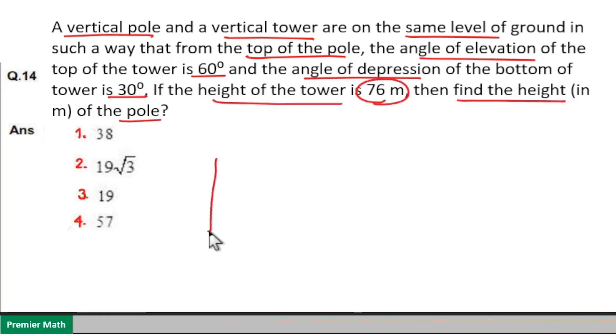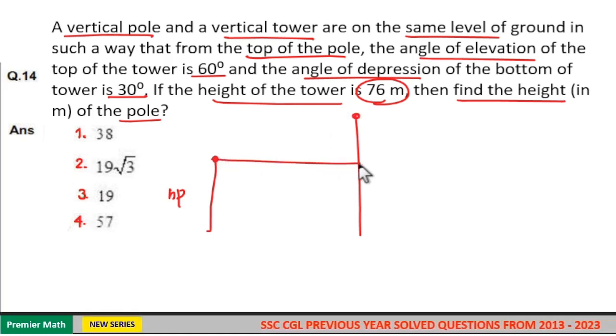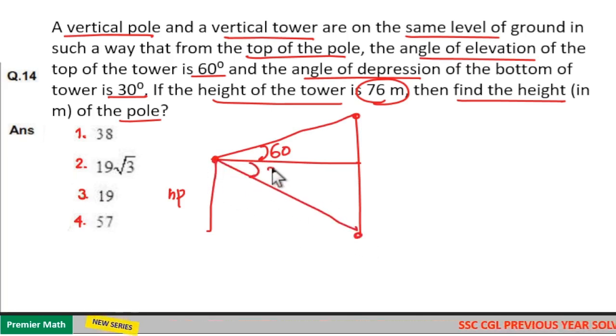Here this is the height of the pole and this is the height of the tower. Now from the top of the pole to the top of the tower, this is the horizontal length. The angle of elevation is 60 degrees, and from the top of the pole to the bottom of the tower, the angle of depression is 30 degrees. The height of the tower is 76 meters as given in the question.